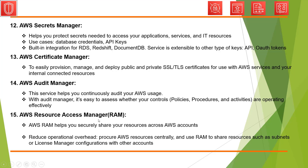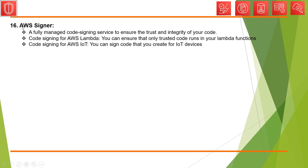The next service is AWS Resource Access Manager (RAM). RAM helps you securely share your resources across AWS accounts. For example, you can procure a resource centrally and use RAM to share that resource across all other accounts — for example, subnets or License Manager configurations can be provisioned centrally and shared across various AWS accounts.